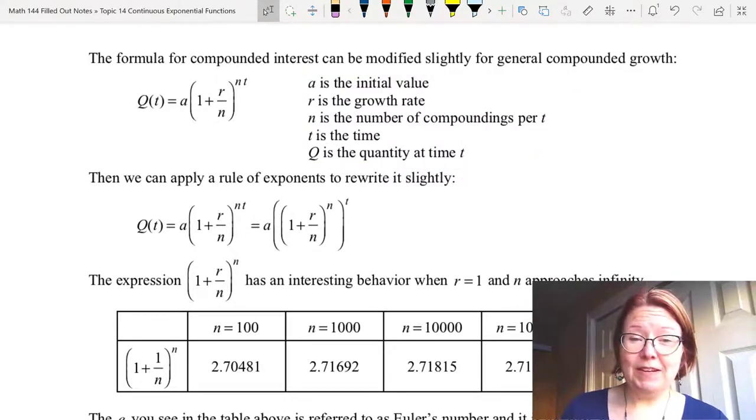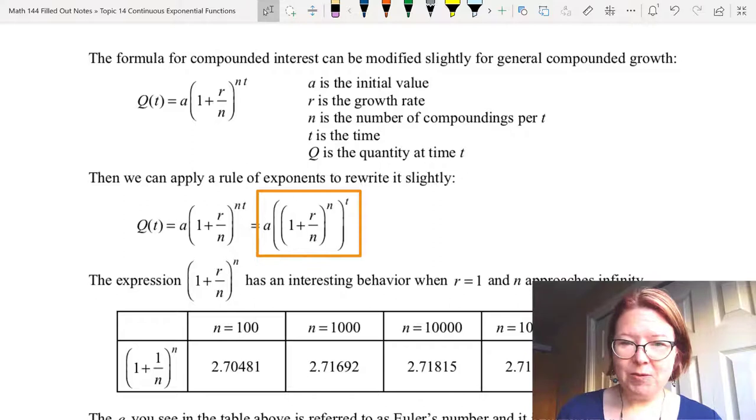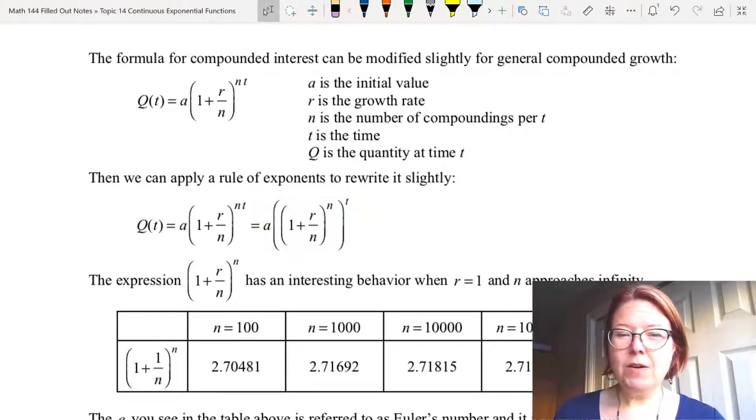Now we can take this formula and do a little rewriting with exponent rules to write it as lowercase a times ((1 plus r over n) raised to the nth power) raised to the t power. All we've really done is move the t in the exponent to the very outside.